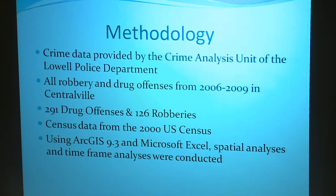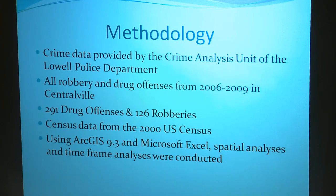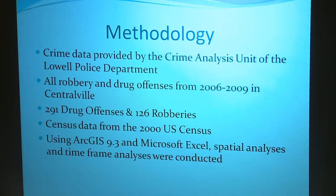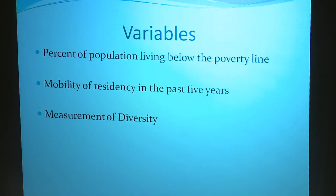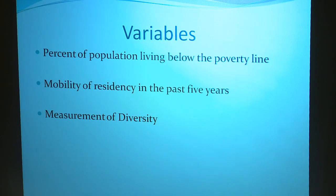I did this using ArcGIS, which is a Geographic Information System. This allows you to make technologically advanced pinpoint maps — similar to maps where detectives or police officers have pinpoints showing where crime is taking place, but with a more modern approach. The three variables I'm examining are the percent of the population working below the poverty line, the mobility of residency in the past five years, and the measurement of diversity.